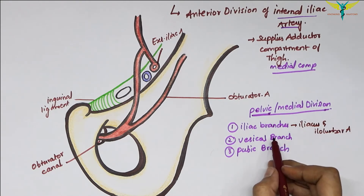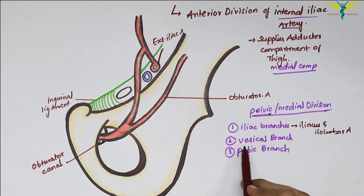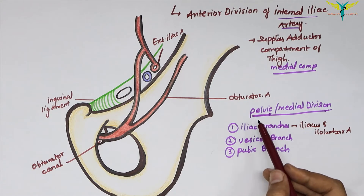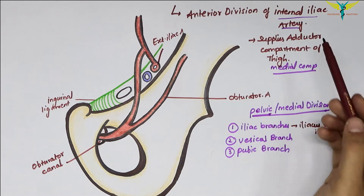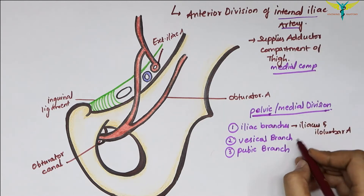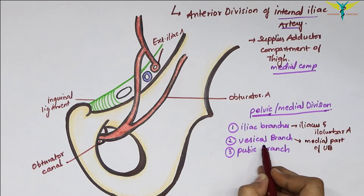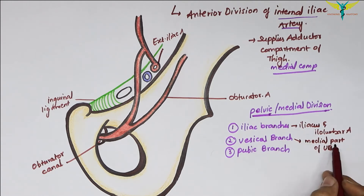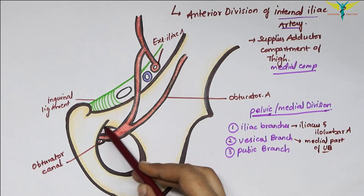The vesicle branches supply the medial part of the urinary bladder. Sometimes this vesicle branch of the obturator artery can be much larger, replacing the inferior vesicle artery, which is a branch of the internal iliac artery. It supplies the medial half of the bladder. The pubic branch arises around the obturator canal.